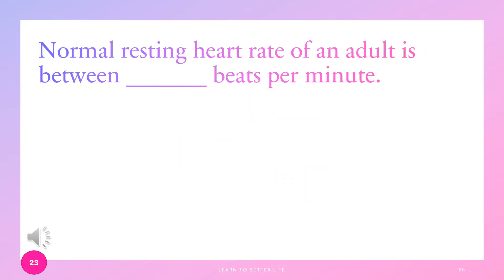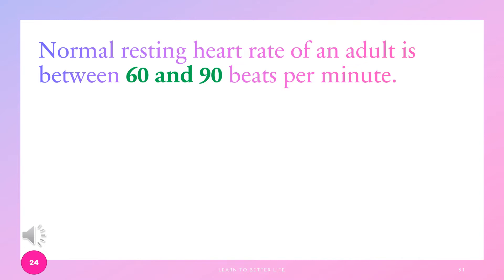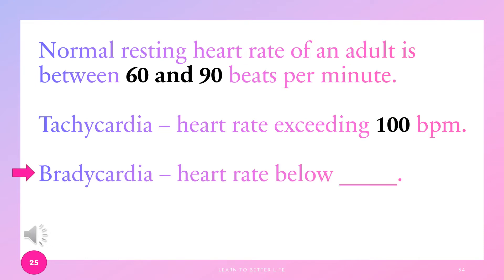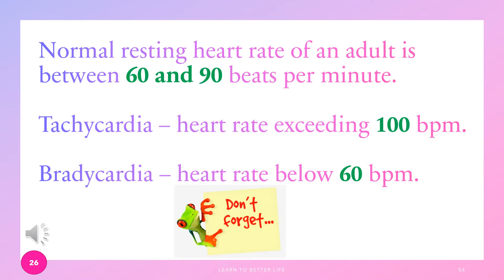The normal resting heart rate of an adult is between 60 and 90 beats per minute. Tachycardia is a heart rate exceeding 100 beats per minute. Bradycardia means slow heart rate — the heart rate is below 60 beats per minute. Please memorize: normal 60–90, tachycardia above 100, bradycardia below 60 beats per minute.